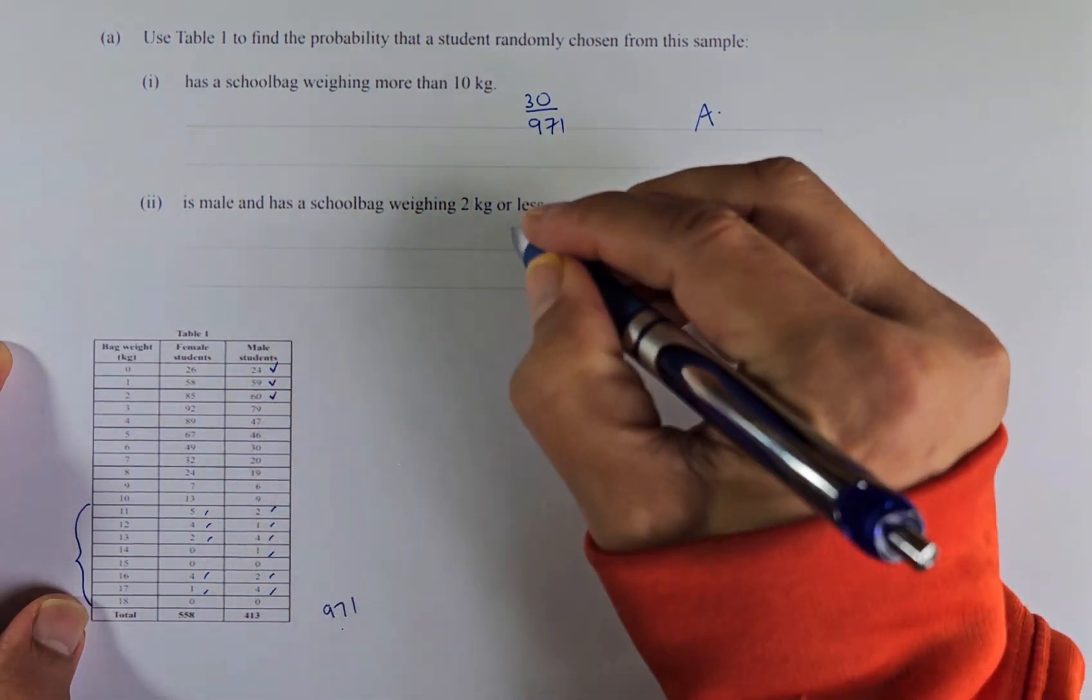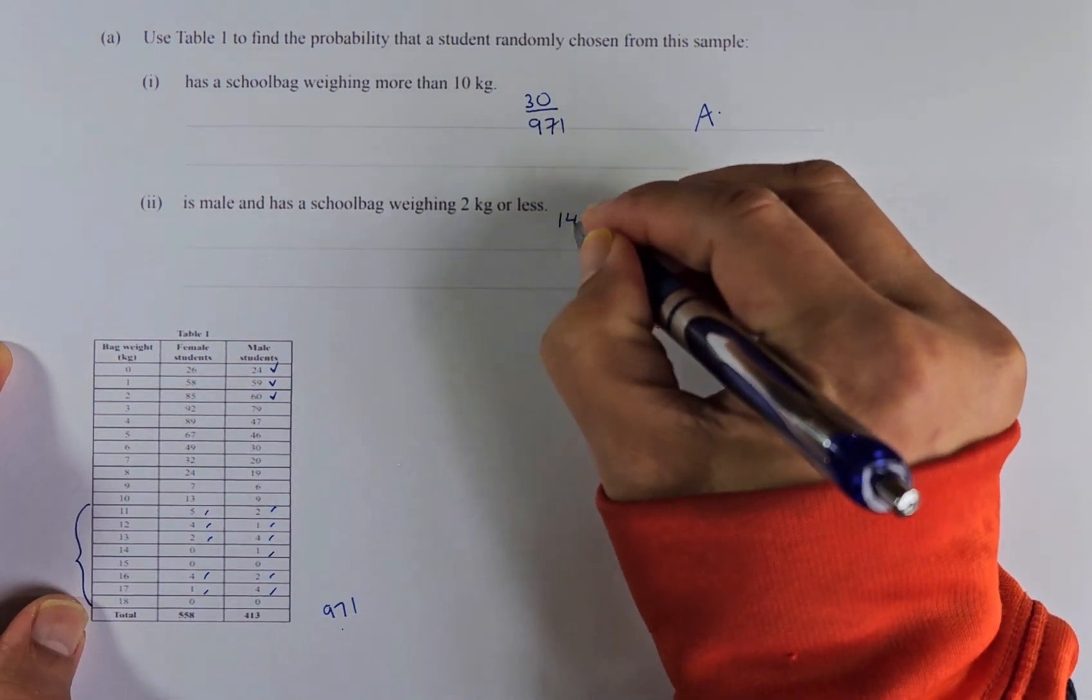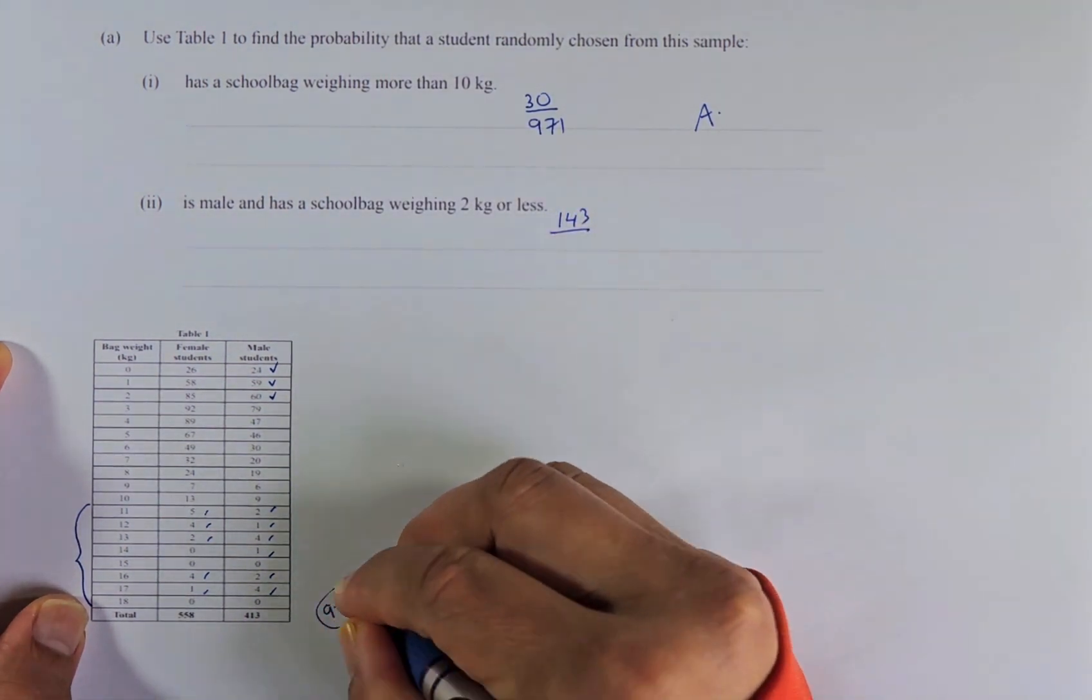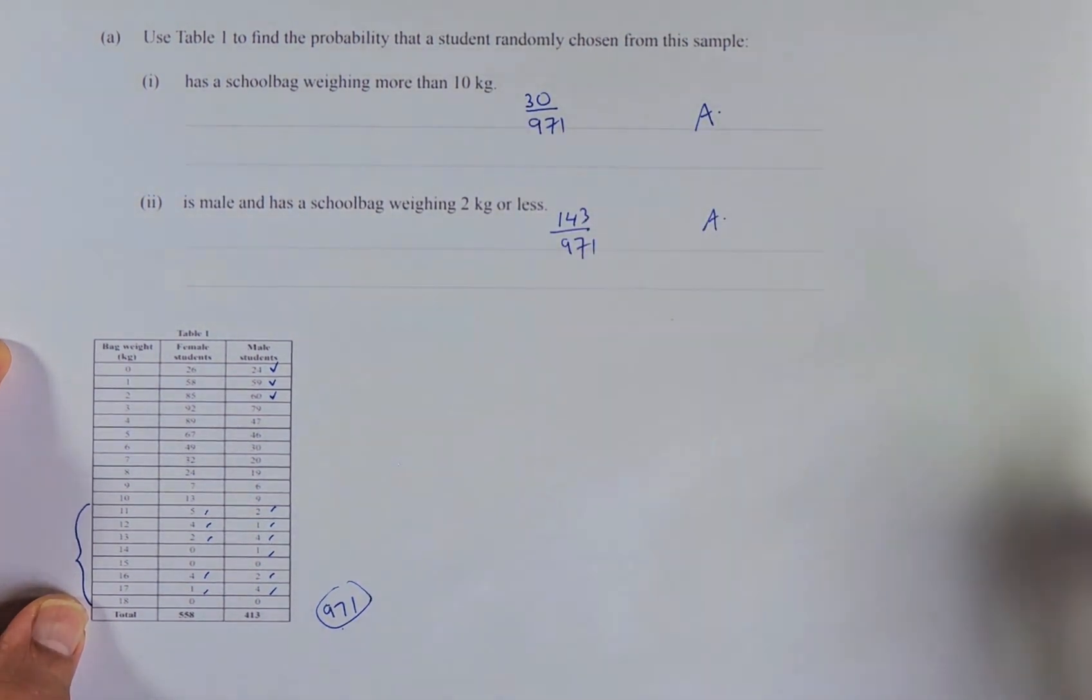So you add 24, 59, 60. The answer is going to be 143 out of the total number of students, which is 971. And if you can answer that, that is another achieve.